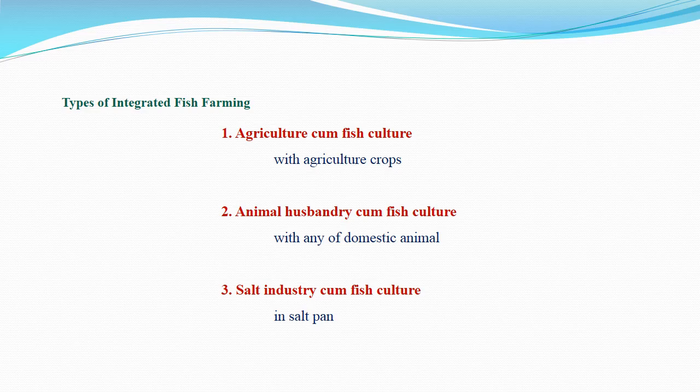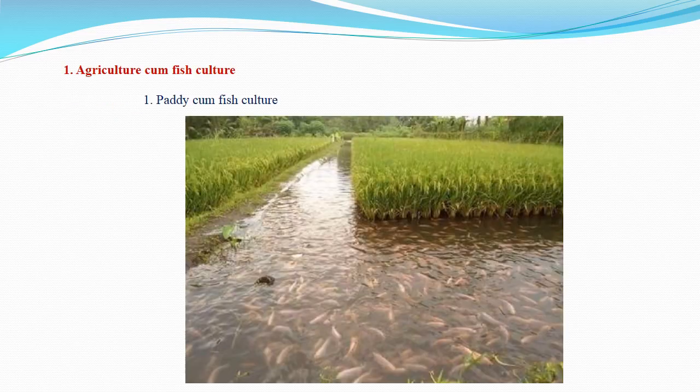Paddy-cum-fish culture is a best example of agriculture-cum-fish culture and has two sub-types. Alternate paddy-cum-fish culture means the culture of fishes in paddy fields after paddy harvest. Relay paddy-cum-fish culture means farming continues in an extended manner even after the paddy harvest, with fish rearing overlapping the crop cycle.